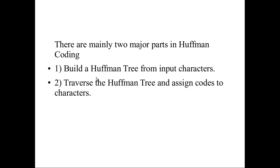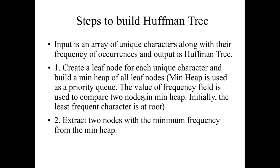In Huffman coding there are two steps: first you have to build the Huffman tree, and second you have to traverse the Huffman tree to assign codes to the characters. To build the Huffman tree, first you will be given n unique characters along with their frequency of occurrences, and the output will be the Huffman tree.